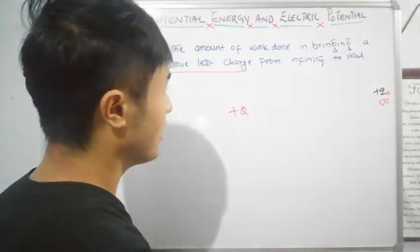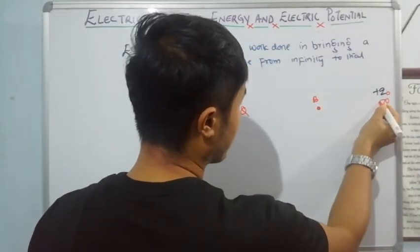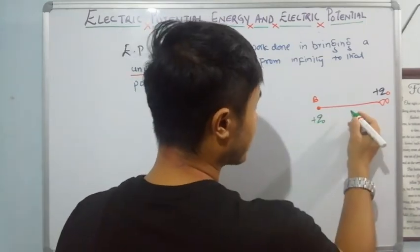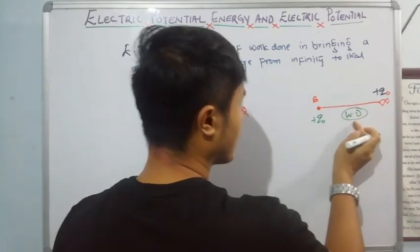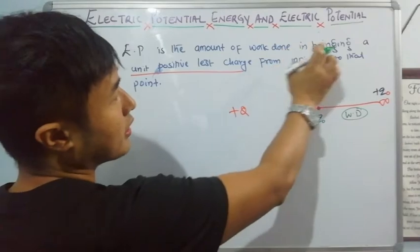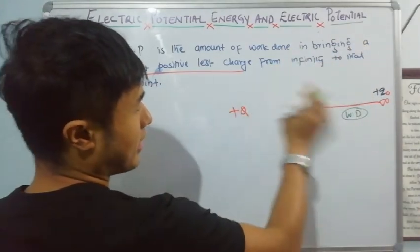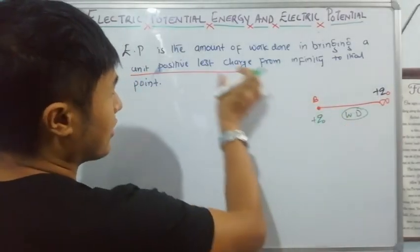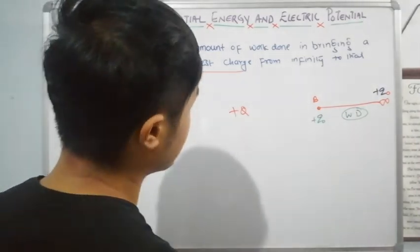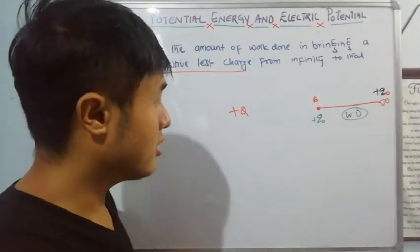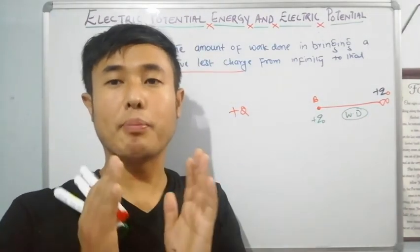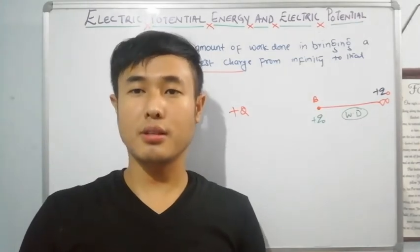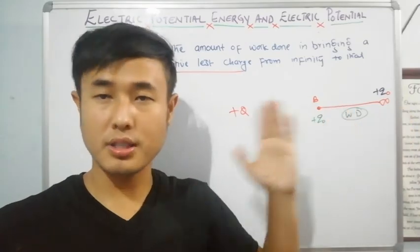So, at point B, you bring a positive test charge to that point. The work done does not depend on the path. Electric potential energy does not depend on path — no matter which path you travel, the work done is the same.